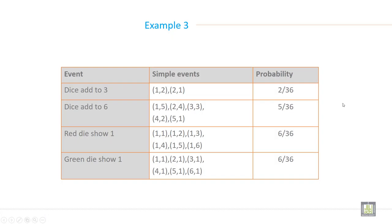Here is Example 3: dice added to 3. This is the simple event and this is the probability.